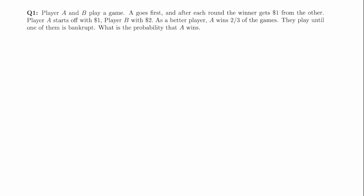A better way to solve this is to let x be the probability that A wins. Let's think about what x could be. If A wins the first two games then A has won, because at that point A has three dollars. So we can say that x is equal to two thirds times two thirds times one — this is just the probability that A wins the first two games and in that case A just wins.